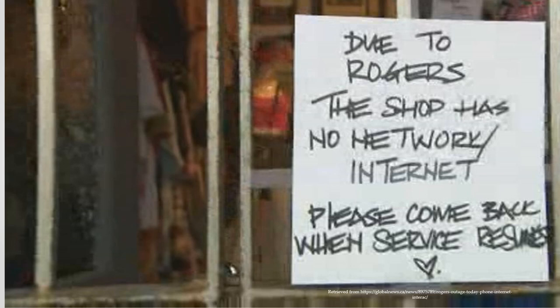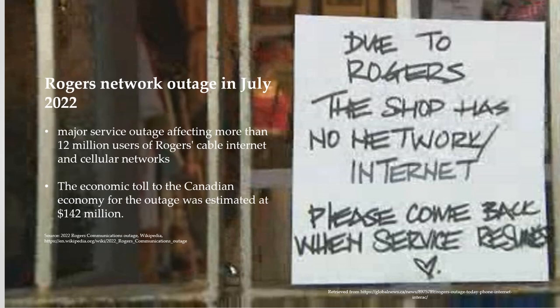The importance of that exclusion clause became very relevant in the aftermath of the major network outage that Rogers suffered in July of 2022. In that major outage, more than 12 million users of Rogers' cable, internet, and cellular networks were affected, and the total economic toll to the Canadian economy was estimated at about $142 million. So many people wondered whether Rogers could be held legally liable for all of the losses that people suffered because of that network outage.